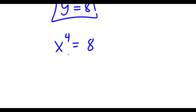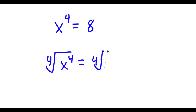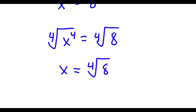To solve this equation, I'm going to take the fourth root on both sides. The fourth root of x to the power of 4 is x, so I have x is equal to the fourth root of 8.